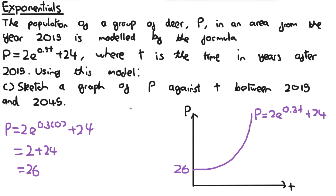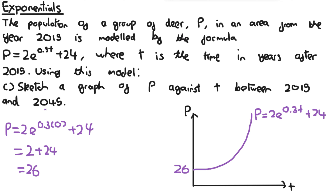The question specifies between 2015 and 2045. This is just to indicate an appropriate time frame for the model — a population of deer can only be realistically modelled over so many years, not hundreds of years into the future. So this constraint simply defines a sensible domain for the model.